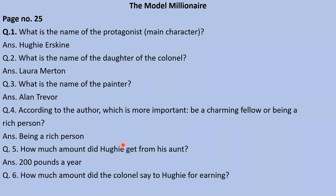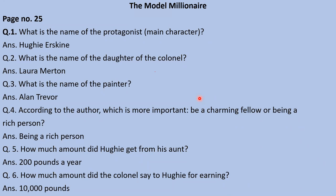Last question: How much amount did the Colonel say to Hughie for earning — what was the amount the Colonel required? Lavisha raises her hand and answers: '10,000 pounds.' Yes, very good — 10,000 pounds was the amount. In this way I will keep asking internal questions based on the chapter, so listen carefully.